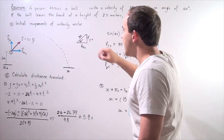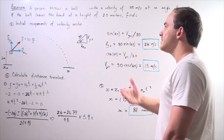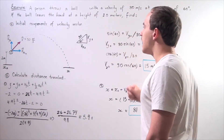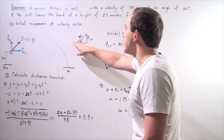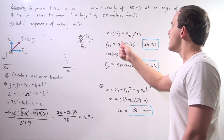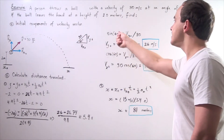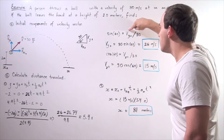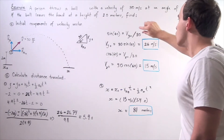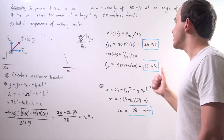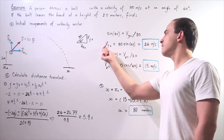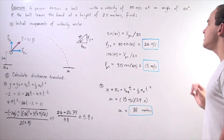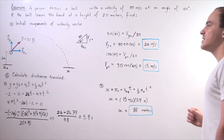Sine of the angle 60 is equal to the opposite side divided by our hypotenuse, our 30. So sine 60 is equal to our y-component vector divided by 30. We rearrange and solve for our v-y-naught, and we get approximately 26 meters per second.